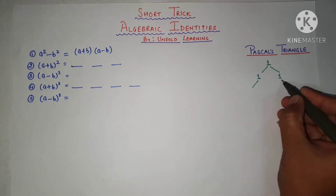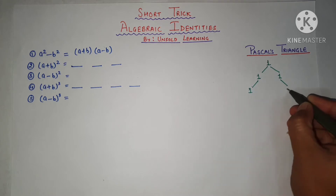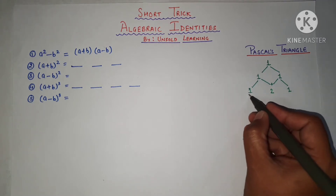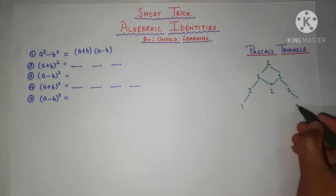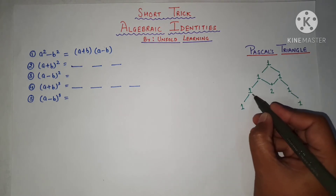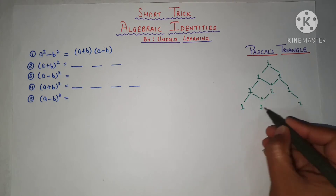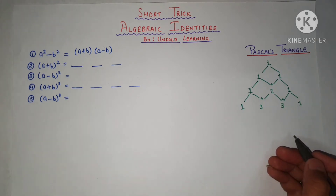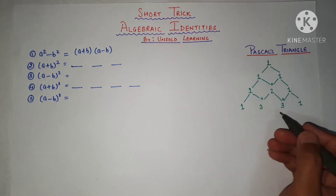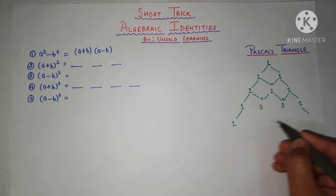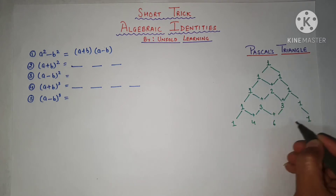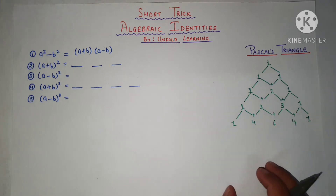We write 1 and 1 in the next row. Then we add adjacent numbers: 1 plus 1 is 2, giving the row 1, 2, 1. We can expand it again: 1 and 1 on the ends, 1 plus 3 is 4, 3 plus 3 is 6, 3 plus 1 is again 4. So we build the coefficients 1, 3, 3, 1 and 1, 4, 6, 4, 1 this way.